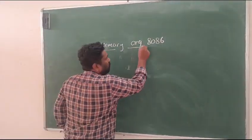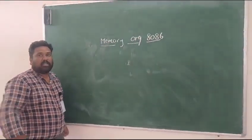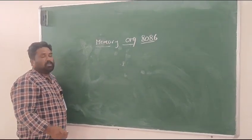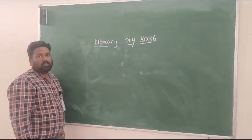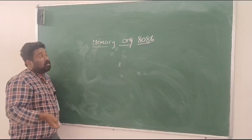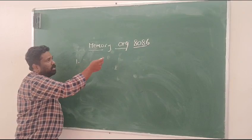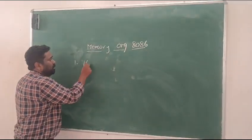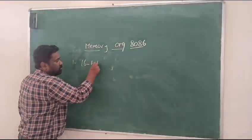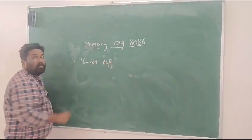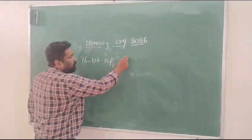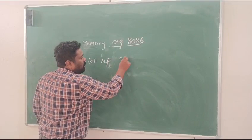Before we discuss about memory organization, we need to know the specifications of microprocessor. Those are related to the memory organization of 8086. The first one is 8086 is a 16-bit microprocessor, so that it is having 16 data lines.